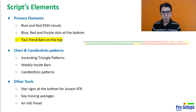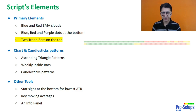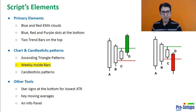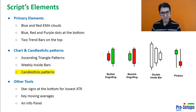We also see two trend bars on the top of the chart — the upper one being the higher time frame trend and the lower one being the current time frame trend. Then we see charts and candlestick patterns which are ascending triangle patterns, double weekly inside bars, and candlestick patterns like bullish engulfing, bearish engulfing, double inside bar and pin bars.